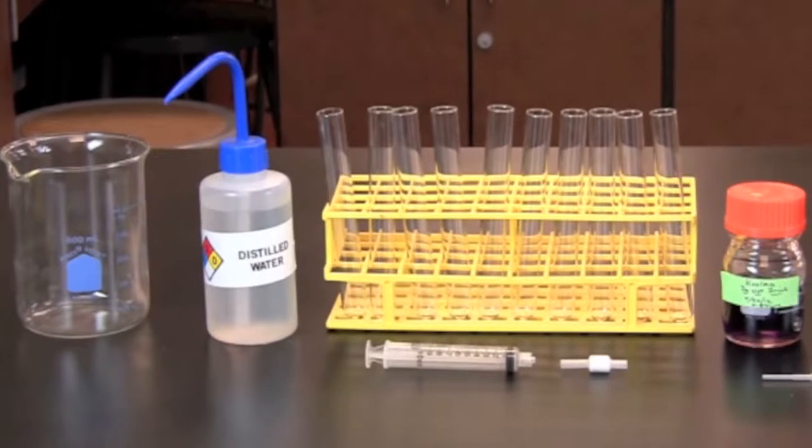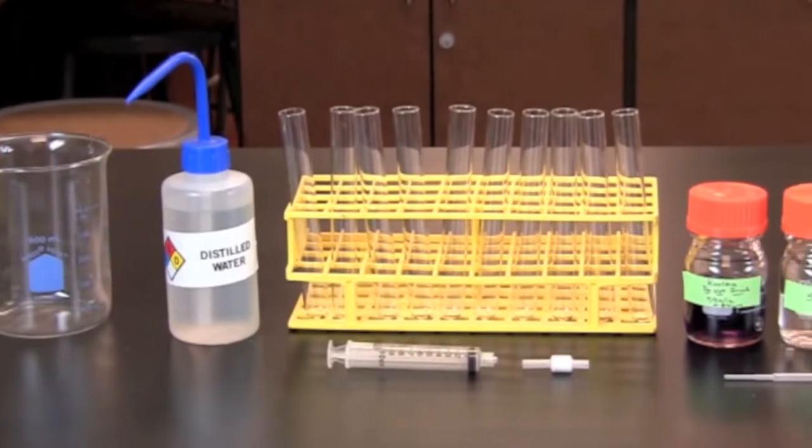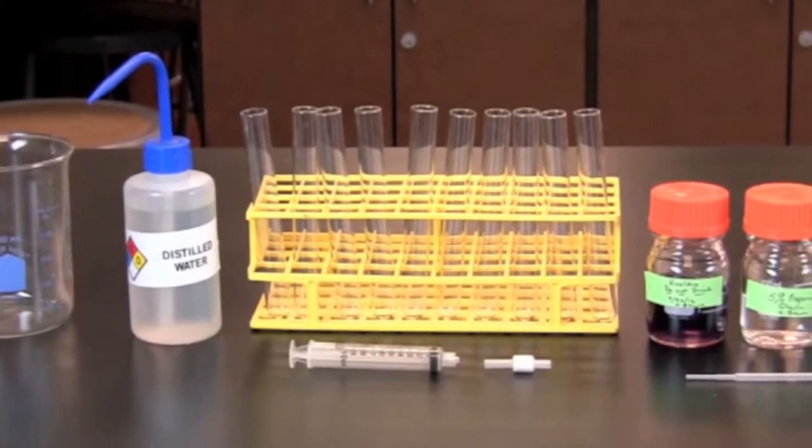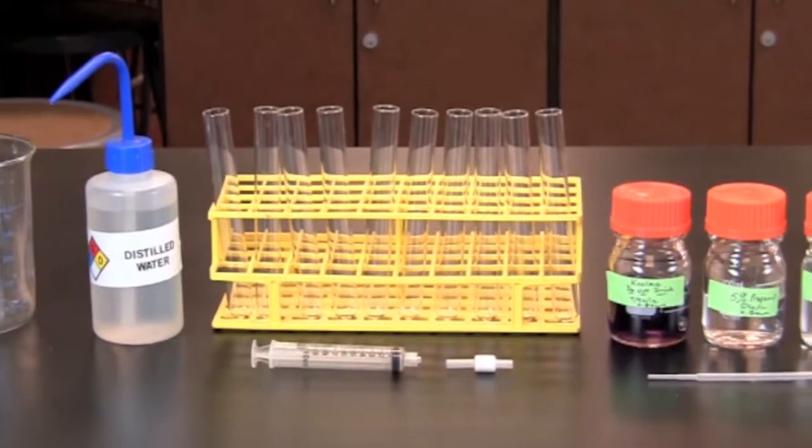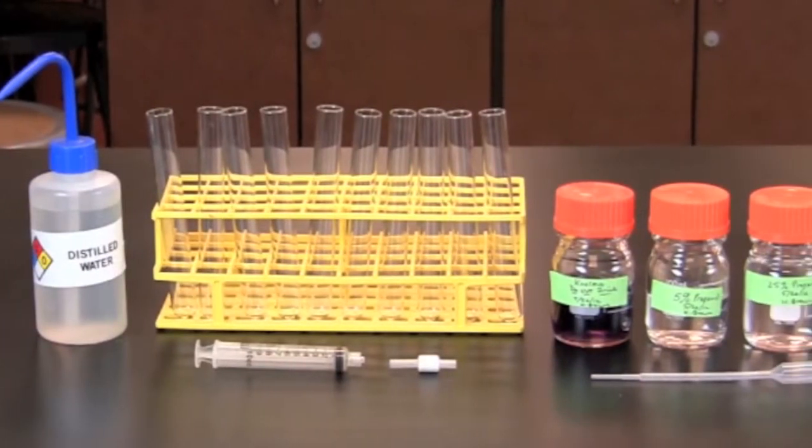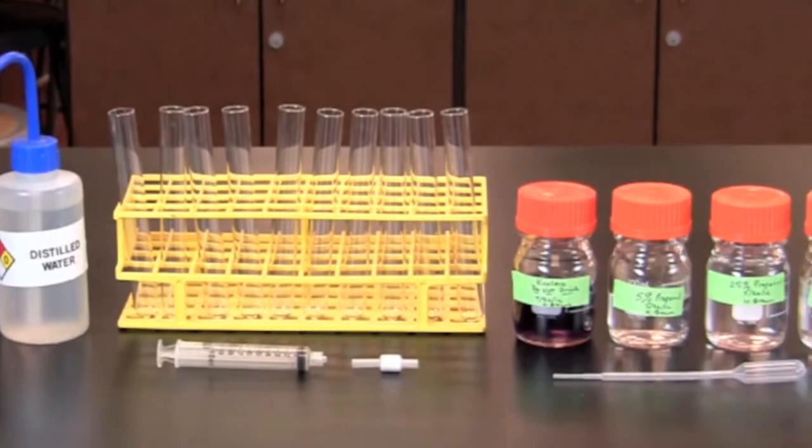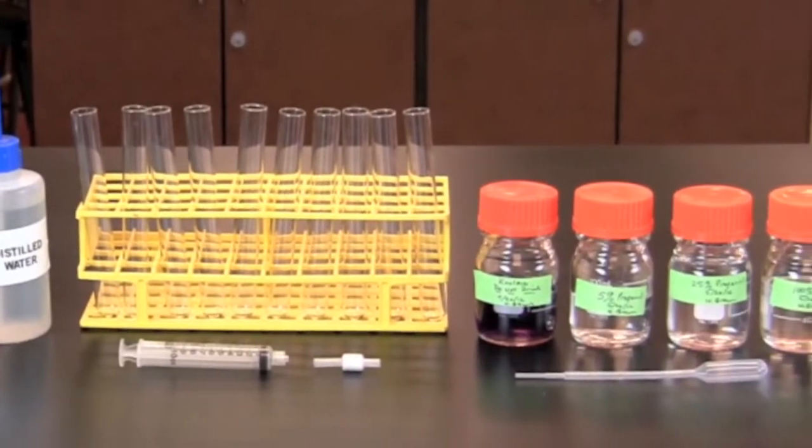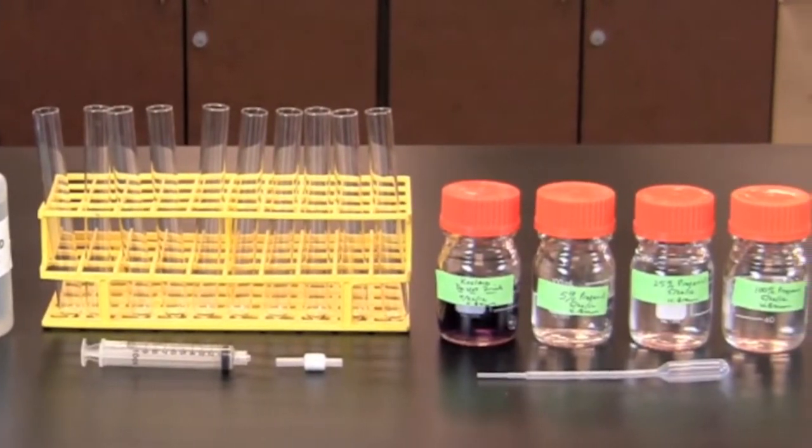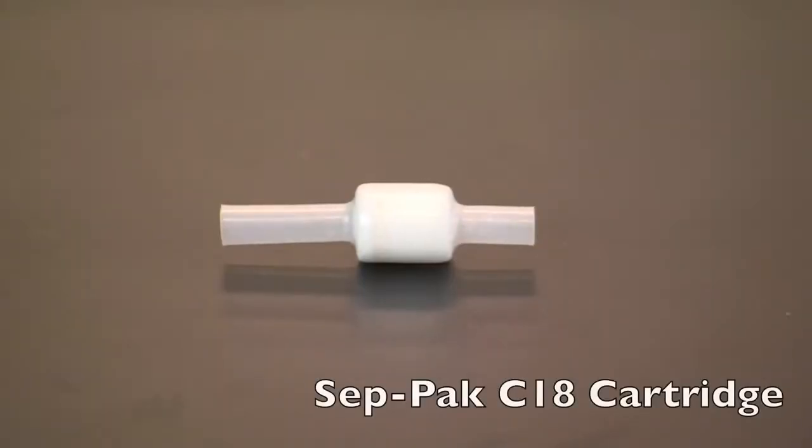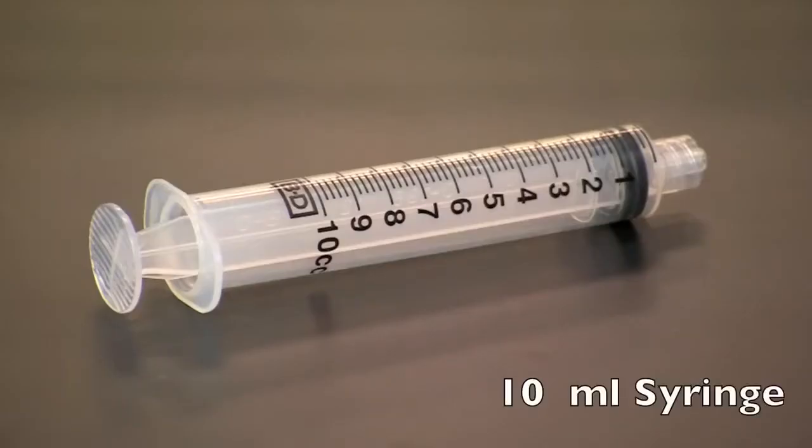Prior to starting this lab, you will need to obtain a beaker for waste, a squirt bottle with distilled water, 10 clean test tubes, a mixture of Kool-Aid, 5% and 25% 2-propanol solutions and concentrated 2-propanol. You will also need a CEPPAC C18 cartridge and a 10 ml syringe.